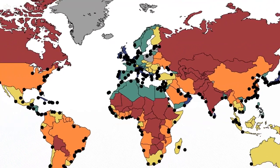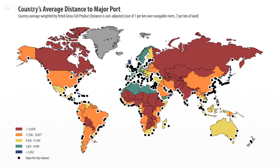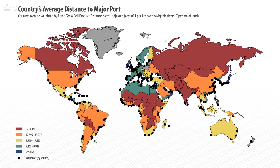Each black dot on this map is a major port. One can then look at the distribution of a country's population and ask how far it is from the nearest port. If it's a landlocked country, there's an added problem: the nearest port is by definition in someone else's country. So not only do you have to travel overland to reach that seaport, you also have to cross a political border — and that can be a major hindrance.